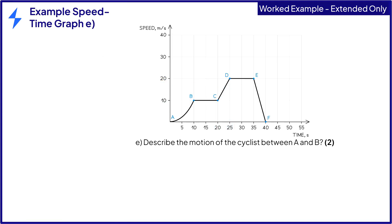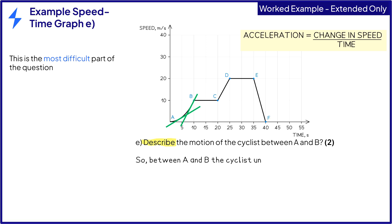Part E asked to describe the motion of the cyclist between A and B. This is the most difficult part of the question. The gradient of a speed-time graph represents the acceleration. Acceleration equals change in speed divided by time. By drawing a tangent to the curve at the bottom and at the top, it is possible to see that the gradient of the curve increases. This means that the acceleration increases between A and B. The two marks are awarded for increasing and acceleration. Draw two tangents to the curve to identify how the gradient changes.